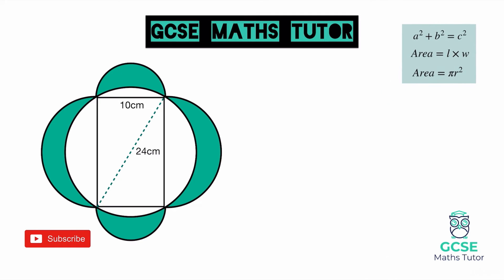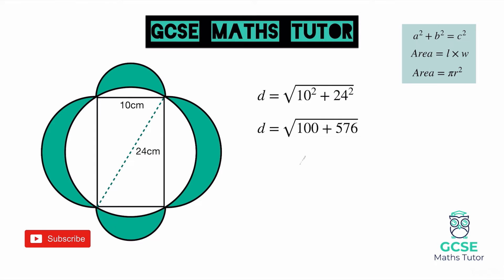The first thing we want to do is work out the diameter using Pythagoras' theorem. Using 10 and 24, the diameter D equals the square root of 10 squared plus 24 squared. 10 squared is 100 and 24 squared is 576, which gives us 676. The square root of 676 is 26, so the diameter is 26. The radius is half of the diameter, so the radius R of this circle is 13.